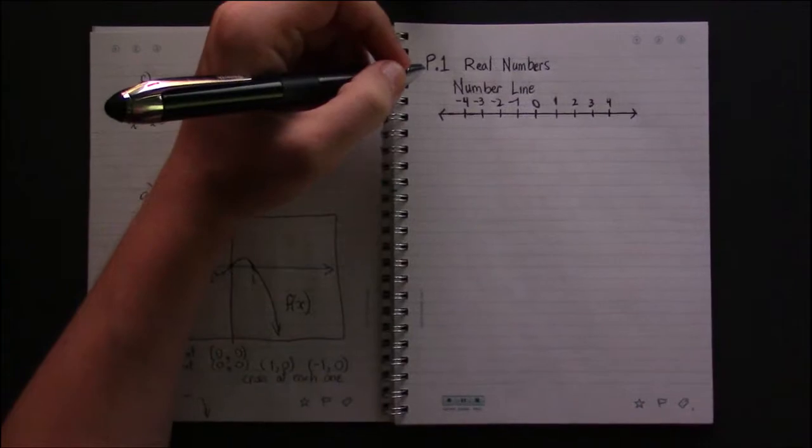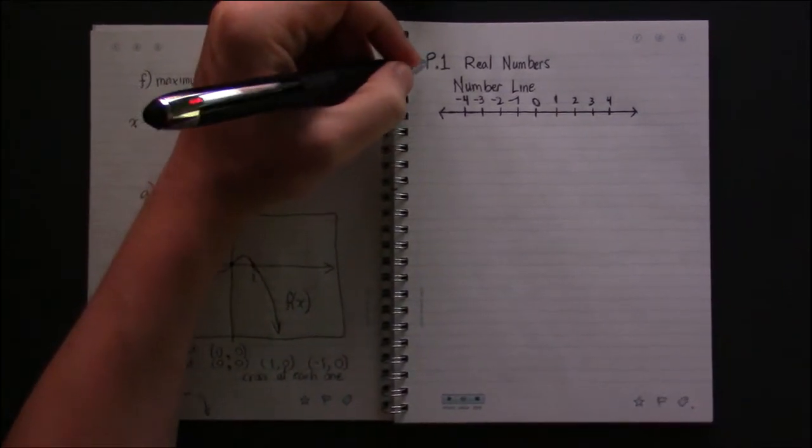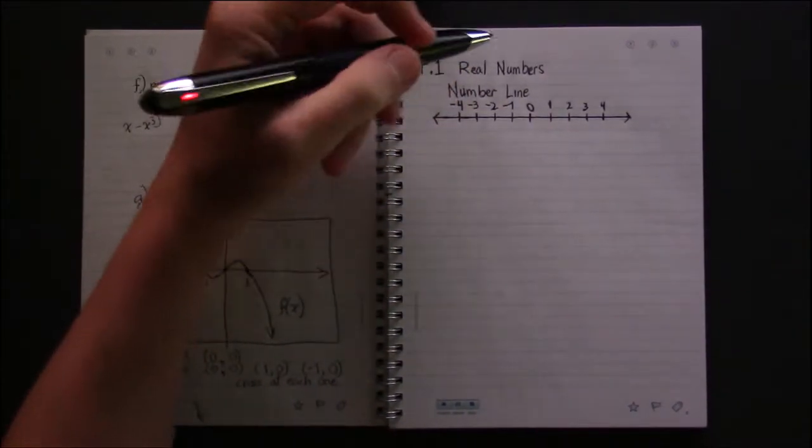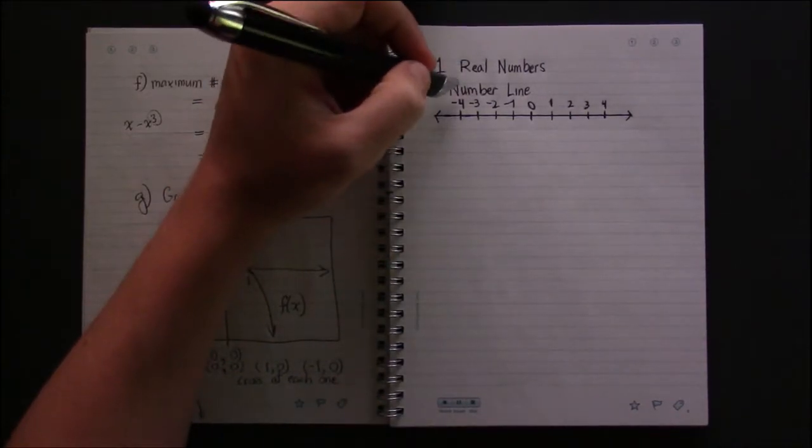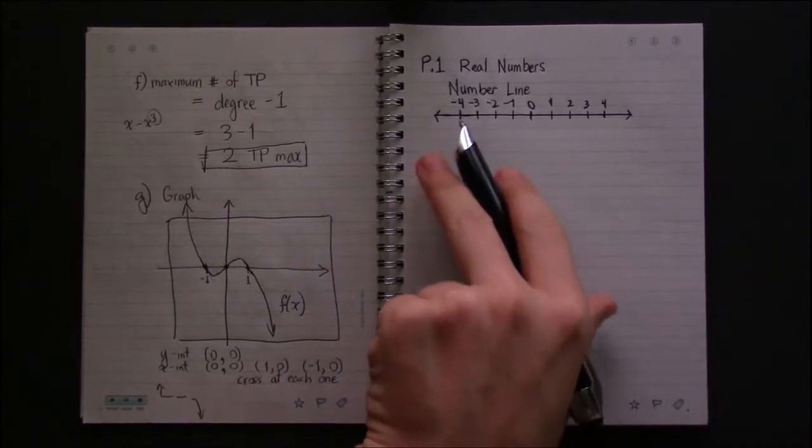We're here in the first chapter of the book, known as Chapter P, in Section 1, talking about real numbers. For now, in this video, we're going to be talking about the real number line, which hopefully many of you are familiar with.